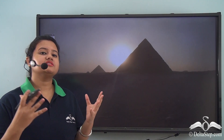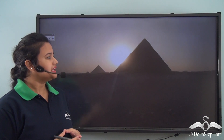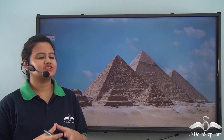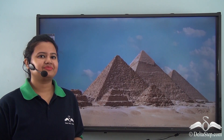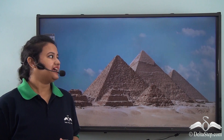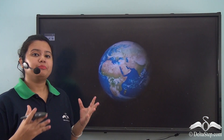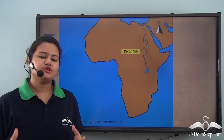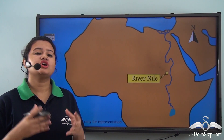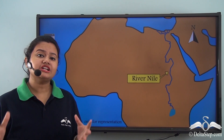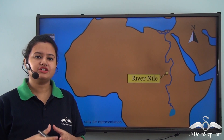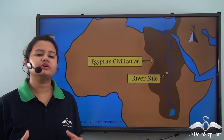Here we can see various conical structures. Can you tell me what these structures are called? Yes, they are called pyramids. Pyramids are a part of Egyptian civilization, which is one of the ancient civilizations in human history.